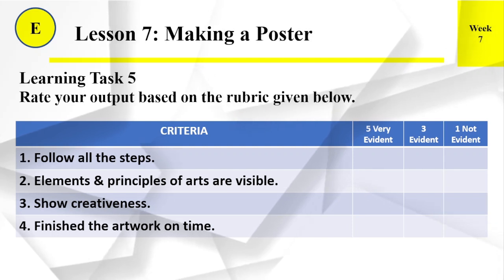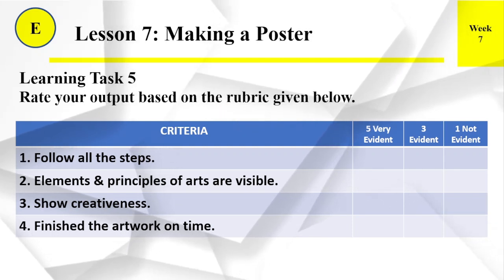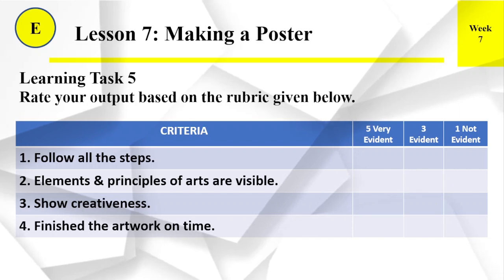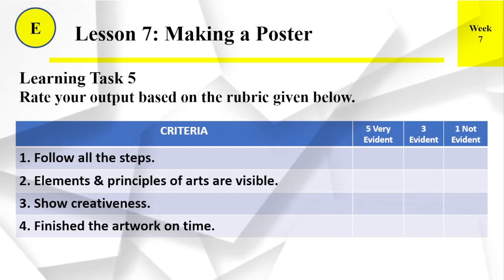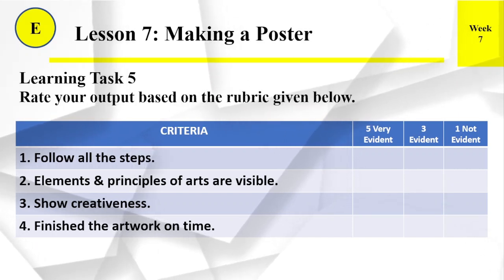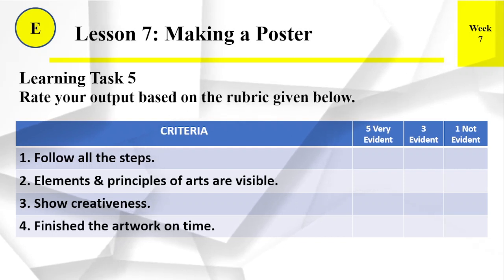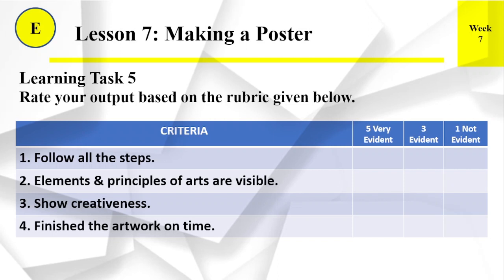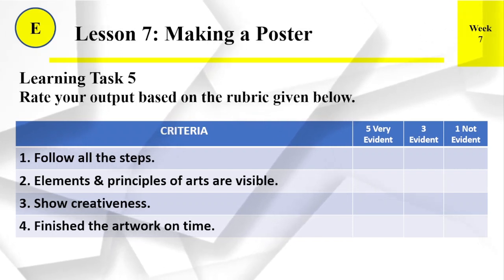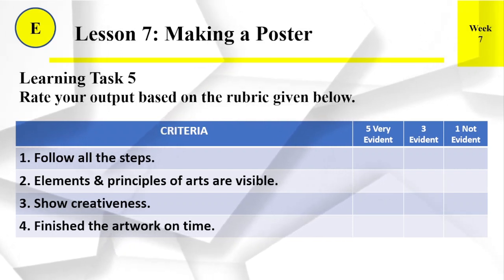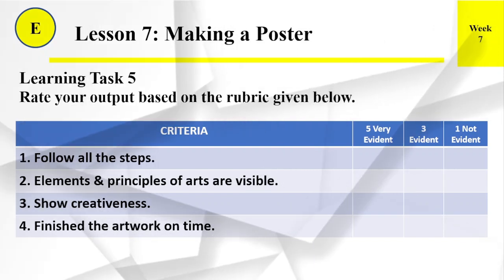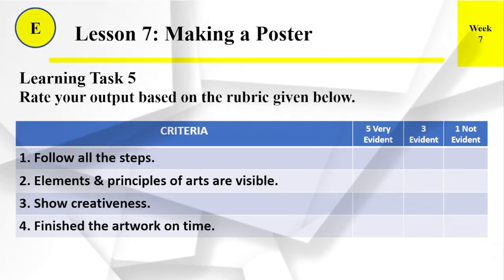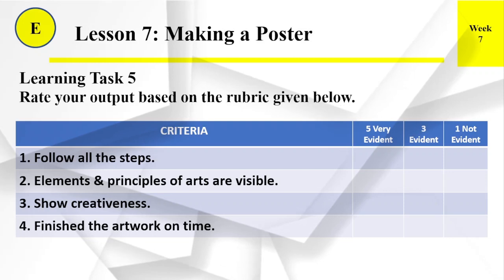Learning Task number 5. Rate your output based on the rubric given below. Here are the criteria: 1. Follow all the steps; 2. Elements and principles of arts are visible; 3. Show creativeness; 4. Finish the artwork on time.